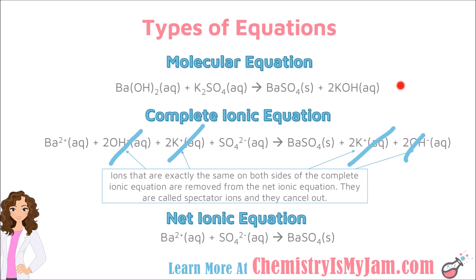To recap: when you write your double replacement reaction and identify your precipitate, that is your molecular equation. From your molecular equation, you can write a complete ionic equation by breaking apart any aqueous substances into their ions, while solids and liquids stay together. Then cancel out anything that is exactly the same on both sides — those are spectator ions. What remains is your net ionic equation. That completes double replacement reactions and precipitation reactions. Stay tuned as we look at our last type of reaction: combustion reactions.